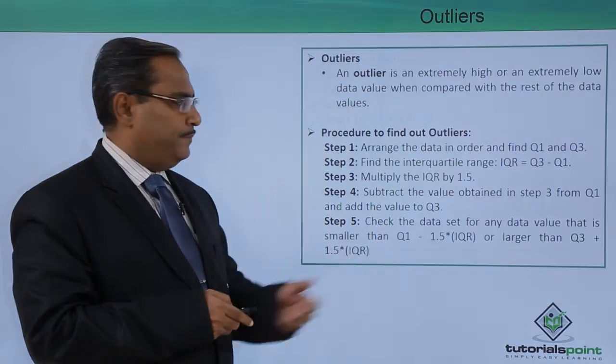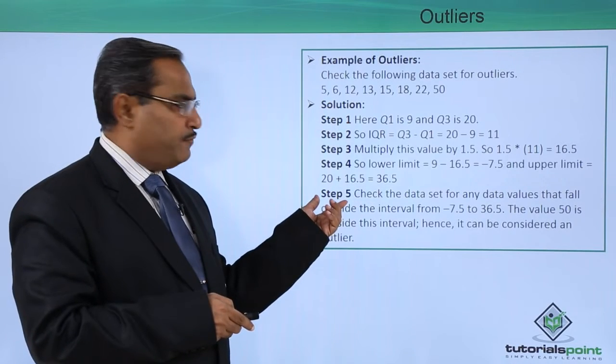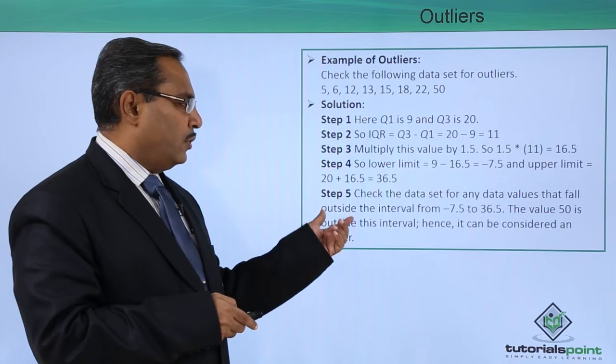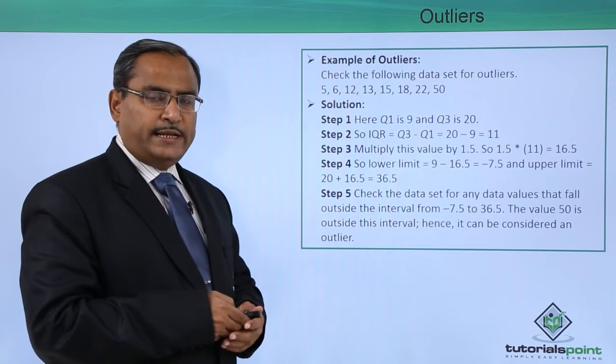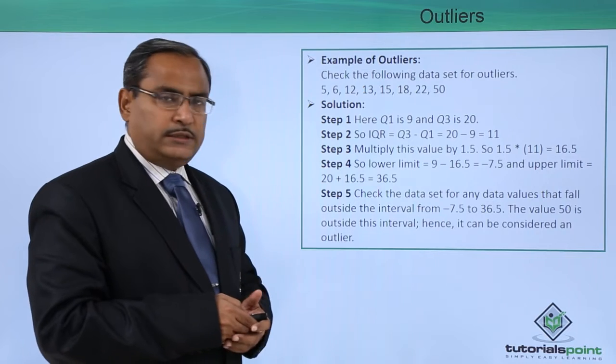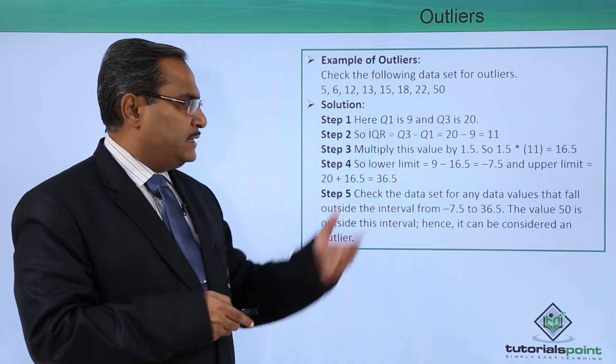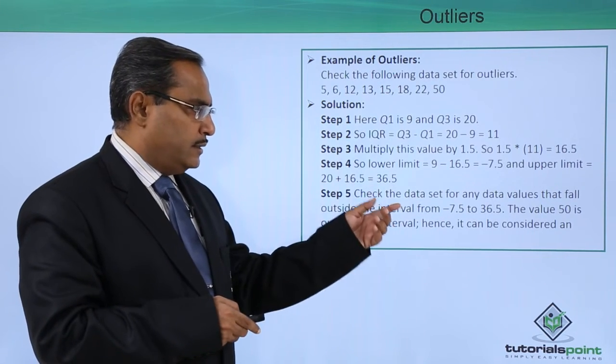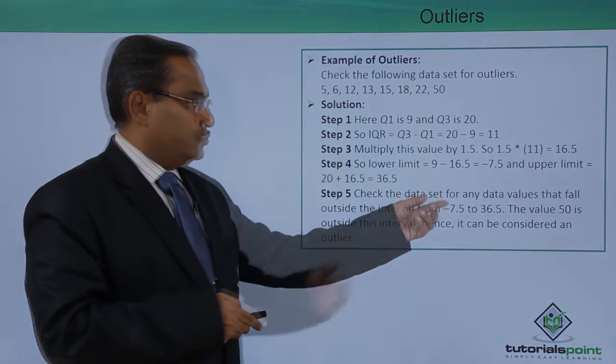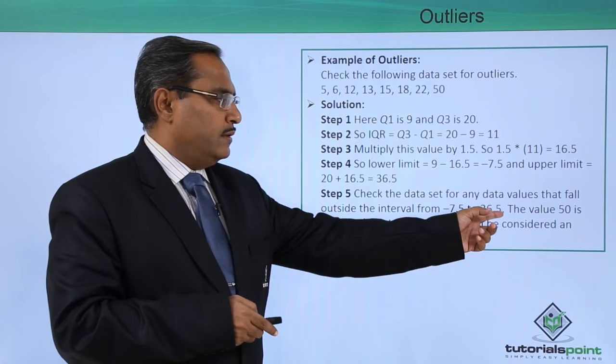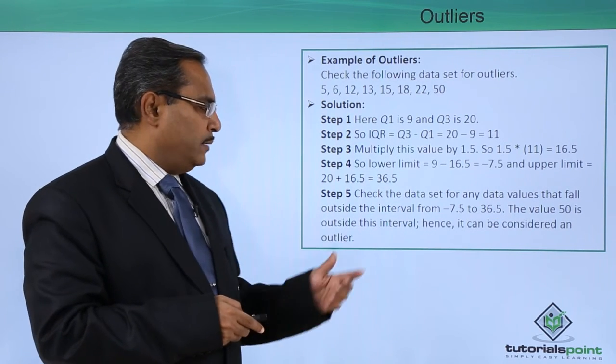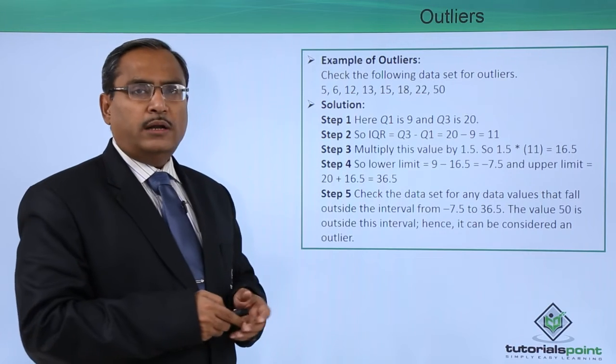Now we are going for step number 5. Check the data set for any data values that fall outside this interval, that is minus 7.5 to 36.5. If there is any value existing, then the value will be treated as an outlier. Here we are getting the value 50 is outside this interval. Hence, it can be considered as one outlier.